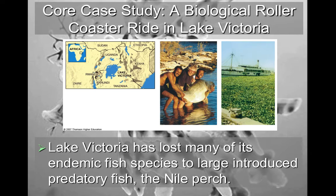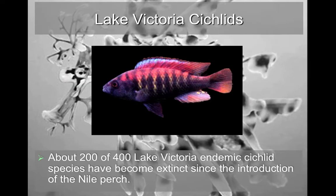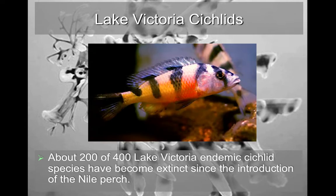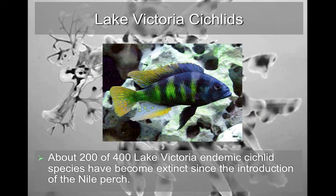First, we're going to start by traveling to Lake Victoria. Lake Victoria has a very large problem — it's lost over half of its endemic fish species to an introduced fish called the Nile perch, which is highly predatory. Since the introduction of the Nile perch, Lake Victoria has lost approximately 200 of their 400 original endemic cichlid species, which have become entirely extinct.